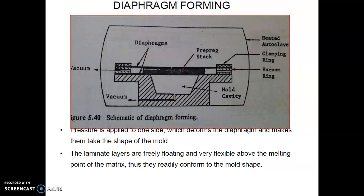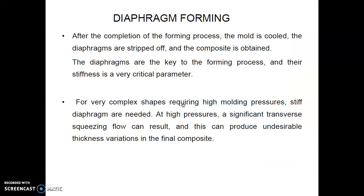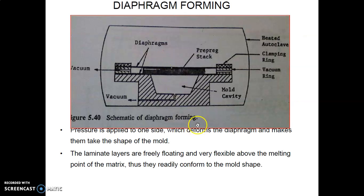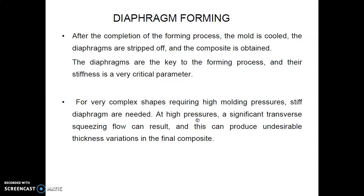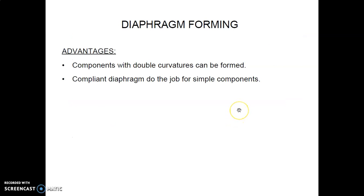The laminate layers are very flexible above the melting point of the matrix, so they readily conform to the mold shapes. After the forming process, the mold is cooled and the diaphragms are stripped off to obtain the composite. Stiffness is a very critical parameter, obtained by the clamping process. For very complex shapes requiring high molding pressures, stiff diaphragms are needed. At high pressures, significant in-plane flow can result, producing undesirable thickness variation in the final composites. Advantages include that double curvature can be obtained, and compliant diaphragms handle simple components.